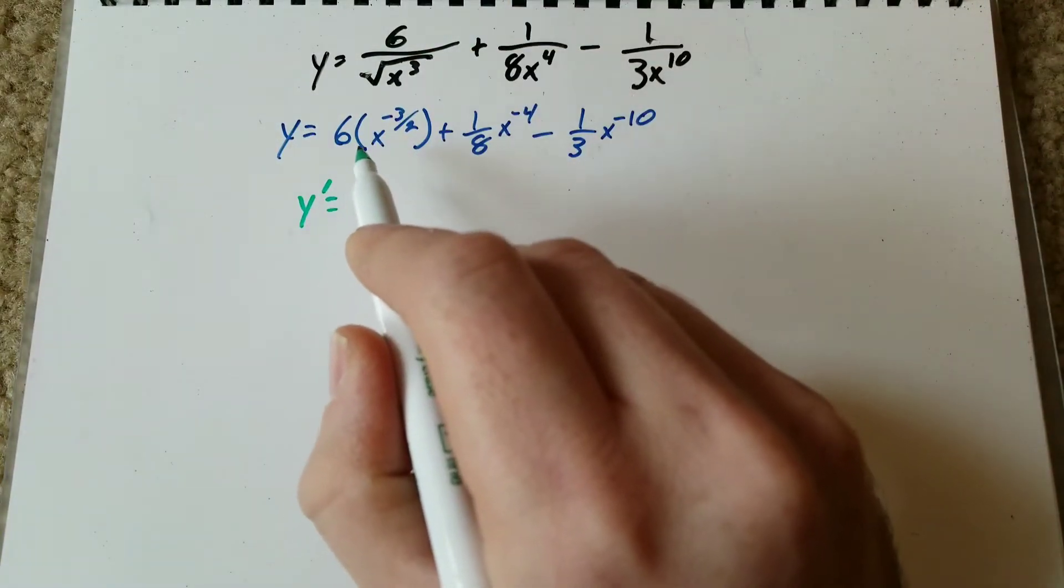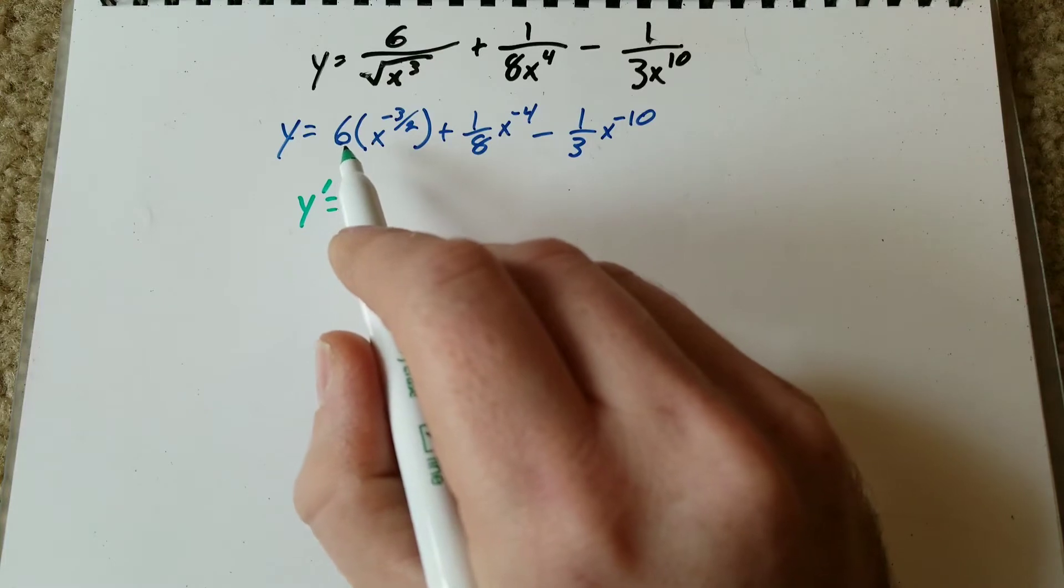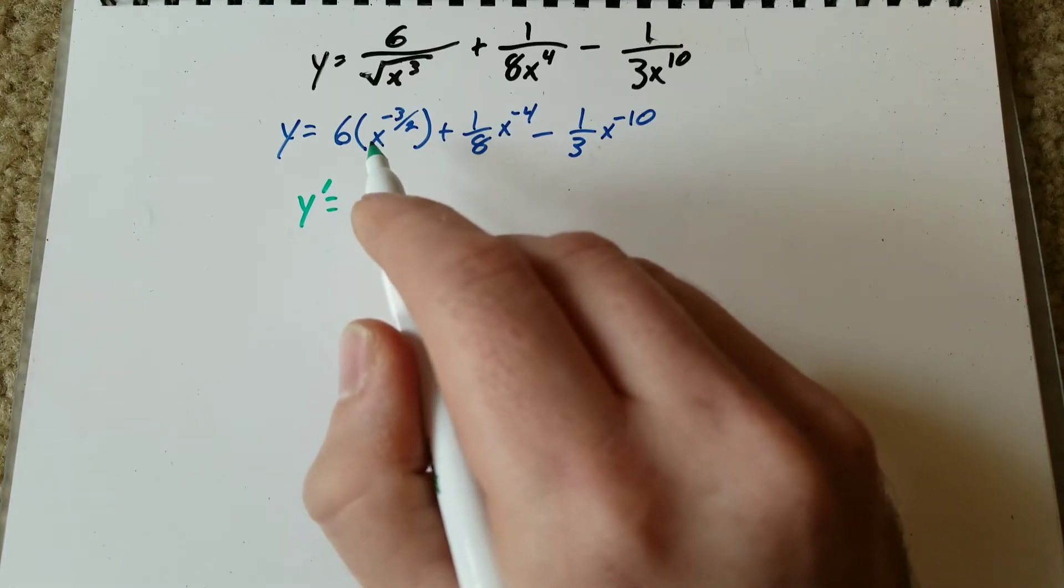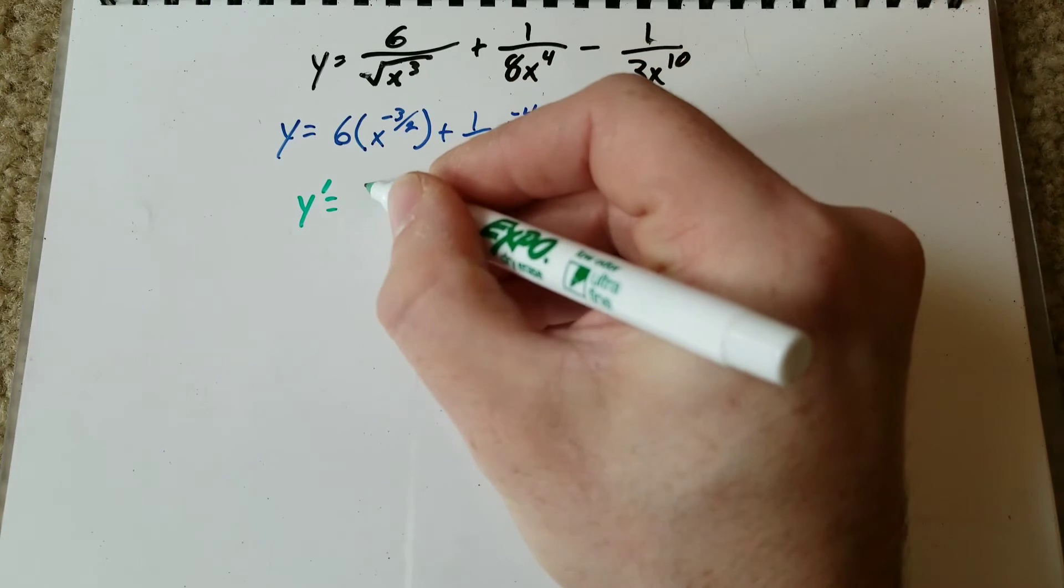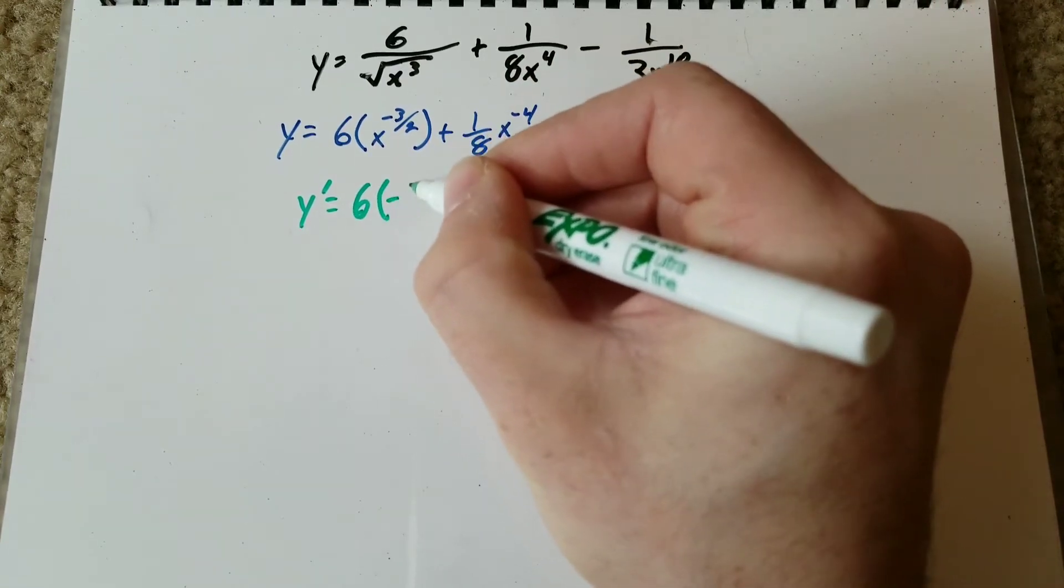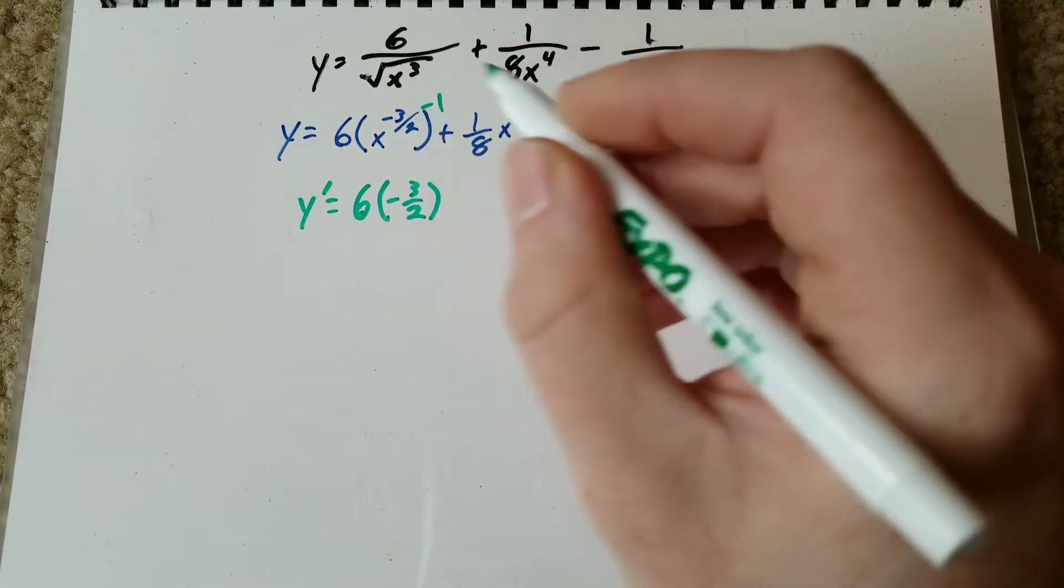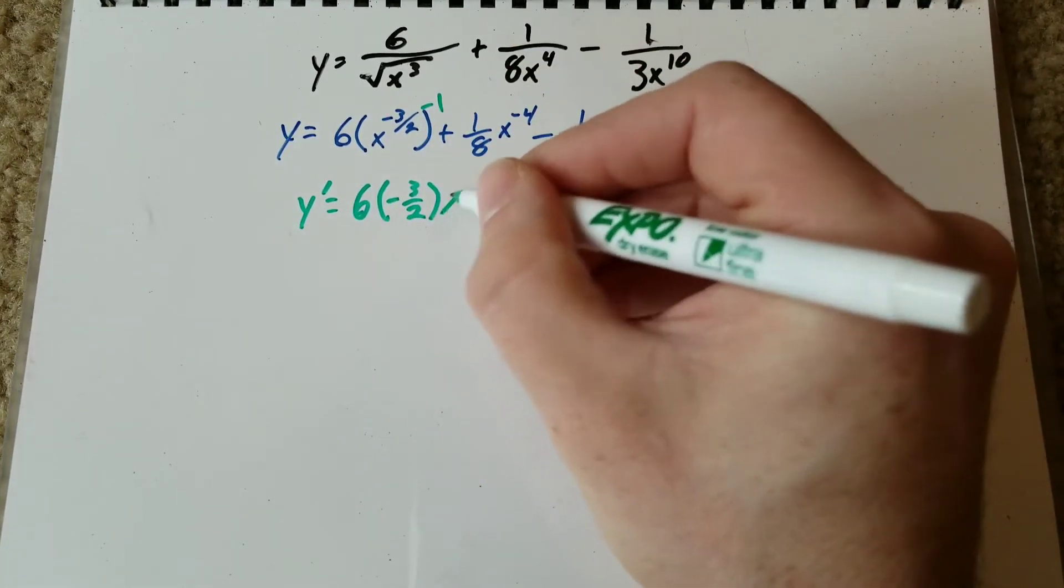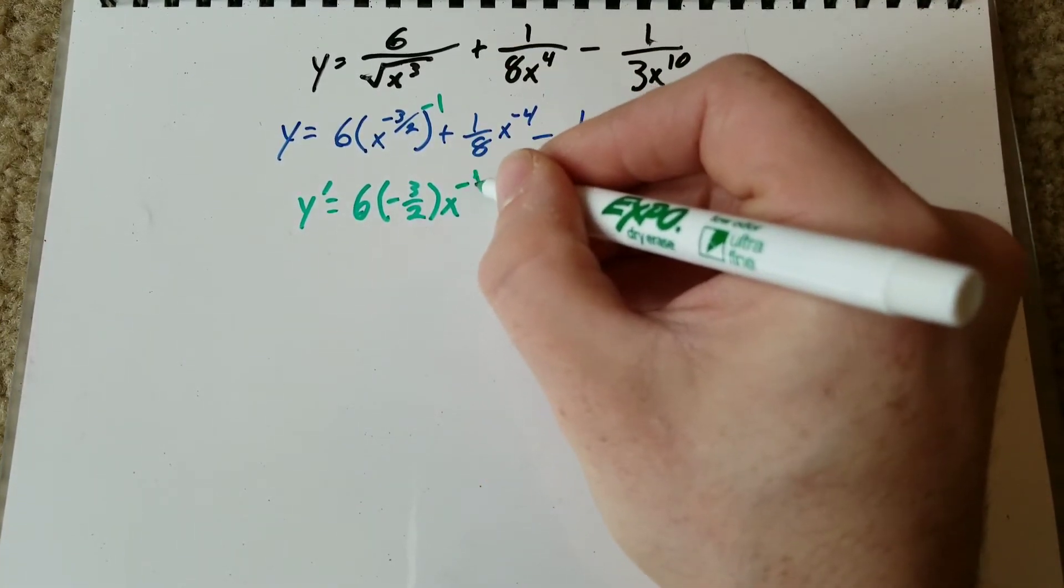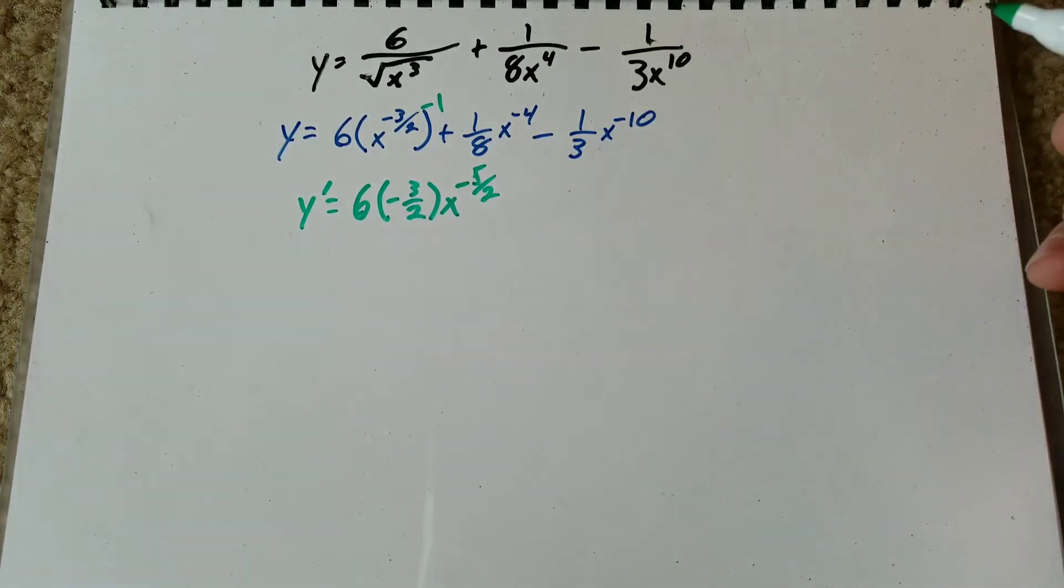So we're going to take the derivative of six x to the negative three halves. That's going to become six times negative three halves. We're going to minus one from our three halves, so that becomes x to the negative five halves like that.